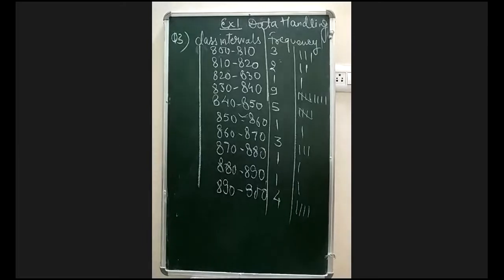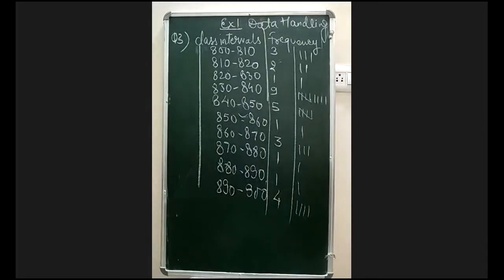We have now drawn the frequency distribution table on the board with class intervals and frequency. Always remember: when we draw a histogram we use only two concepts — class interval and frequency. Question number three is now complete. Question number four asks us to draw a histogram using this data.